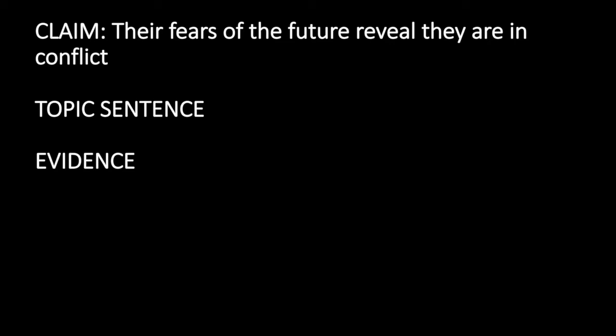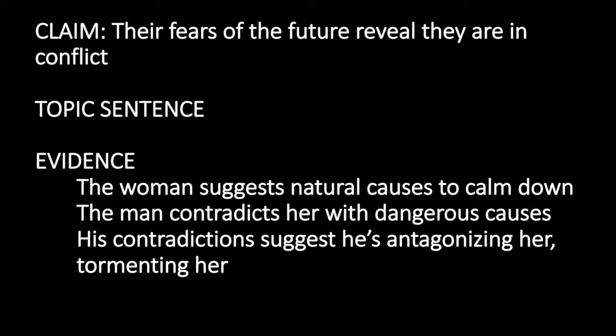Their fears of the future reveal they are in conflict. For evidence, you might write about how the woman suggests that natural causes are causing the sounds of explosions, in order to try to calm herself down, it seems. How the man contradicts her by suggesting causes that are quite dangerous. And how his contradictions suggest he's antagonizing her, maybe even tormenting her. You write about how these pieces of textual evidence suggest that the woman and the man are not united as they face the frightening future together. He's exploiting the frightening situation as a way, maybe, to hurt her. Whatever is going on outside the house, it's bringing to light conflicts between them that have probably already existed.